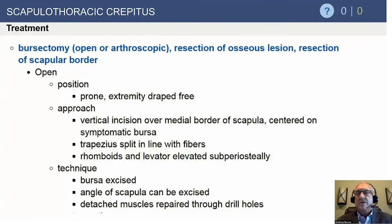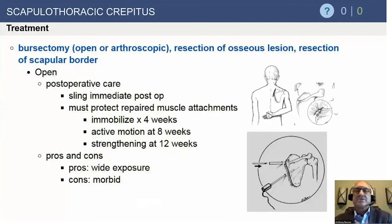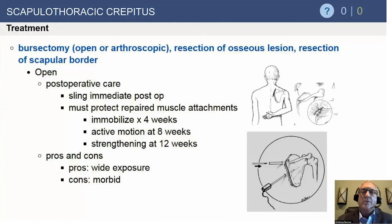For either open or arthroscopic surgery, most of the time patients are prone. For the arthroscopic approach, you put the arm behind the back so it chicken-wings the scapula off the chest wall. You view from the lower portal looking up, with the working portal right at the level of the scapula, and you can take out that triangle of bone.